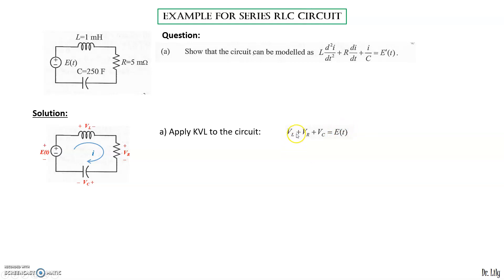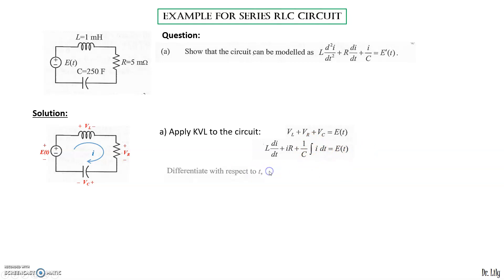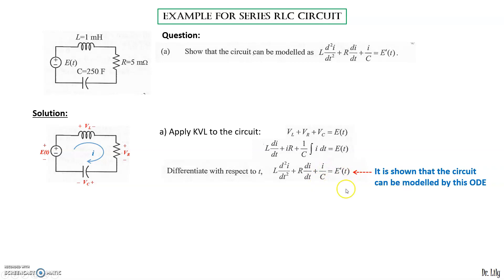We substitute each voltage using its formula: VL = L·di/dt, VR = IR, and VC = (1/C)∫I dt = E(t). Then we differentiate each term with respect to t, giving us: L·d²I/dt² + R·dI/dt + I/C = E'(t). This shows the circuit can be modeled by this ODE — both expressions are the same.